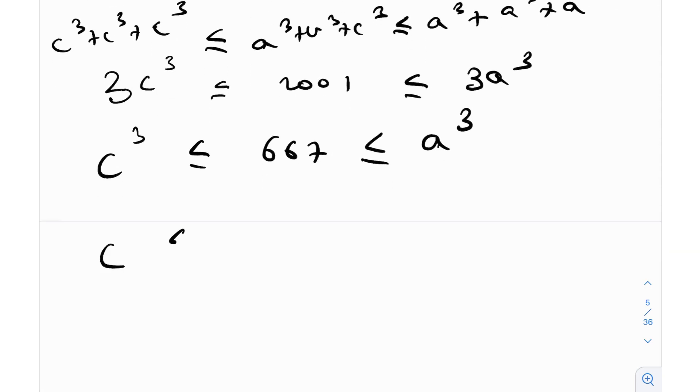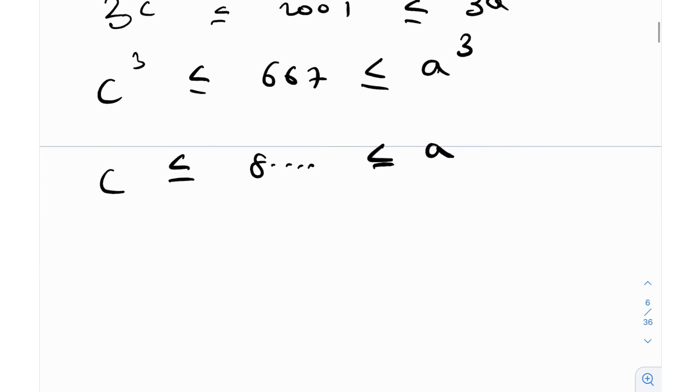It just so happens that 2001 divided by 3 is actually 667, which is great, because we've got some kind of bound. C³ ≤ 667 ≤ A³. If we just take the cube root on both sides, I'll get cube root of 667, which is 8 point something, which is less than or equal to A. So I can make the conclusion that C ≤ 8, and A needs to be greater than or equal to 9. This is awesome, because now you've in a way limited the values of C.